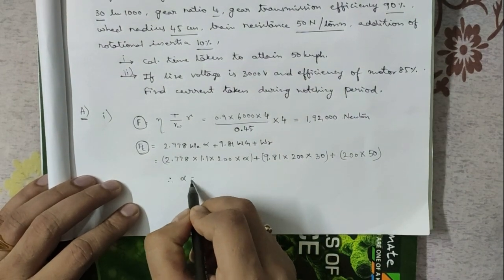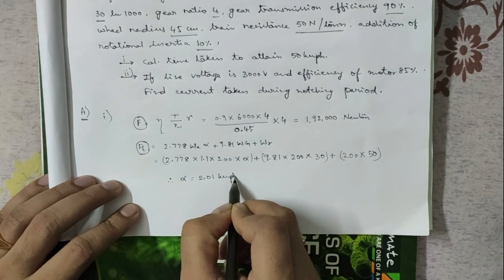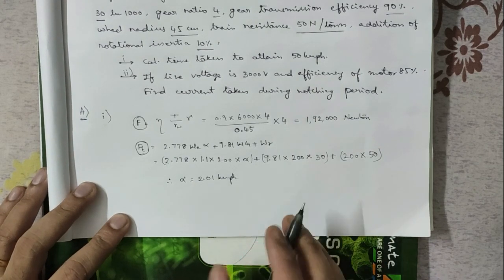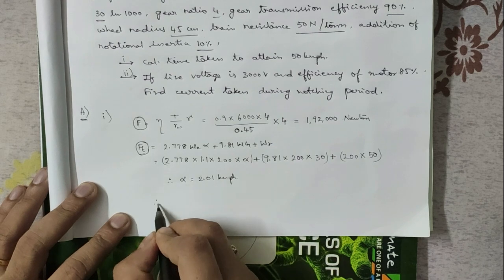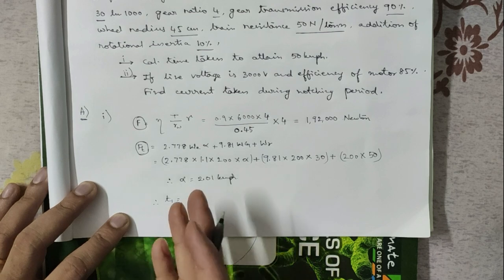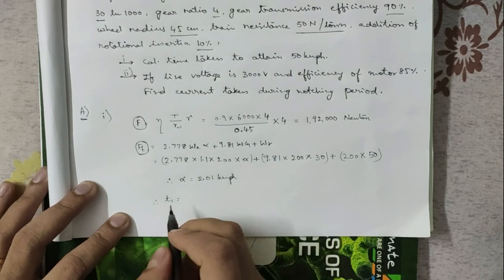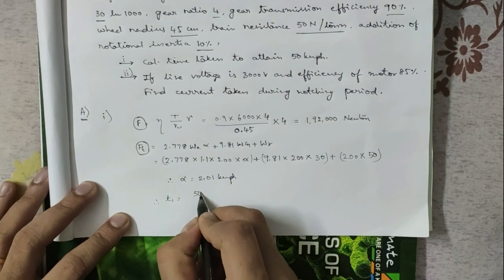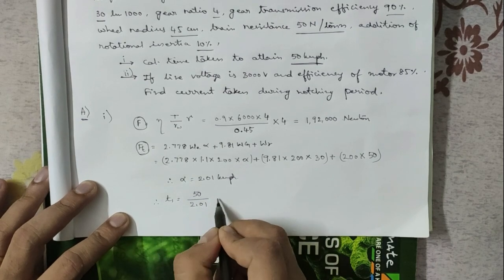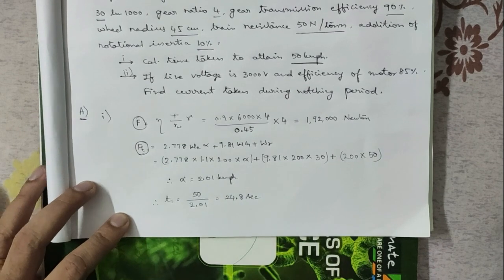Therefore, α comes out to approximately 2.01 kmph/s. This is the acceleration. Since speed = acceleration × time, the time T1 = speed / acceleration = 50 / 2.01 ≈ 24.8 seconds. This is the answer for the first part.